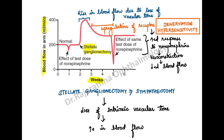Before the stellate ganglionectomy, this is the normal stage: if you give norepinephrine, there is vasoconstriction and a decrease in blood flow. After you do a stellate ganglionectomy, what happens is there is a rise in blood flow, because the intrinsic vascular tone decreases, there is vasodilation, and there is a lot of blood flow increase.